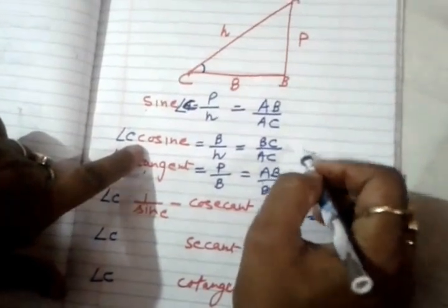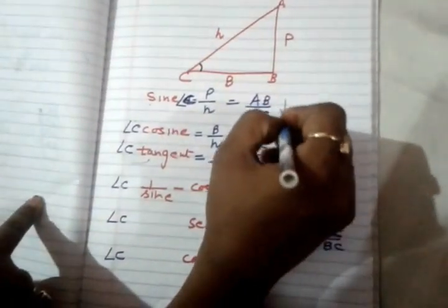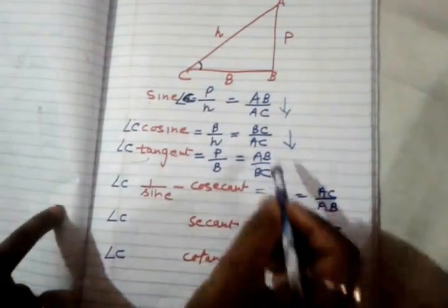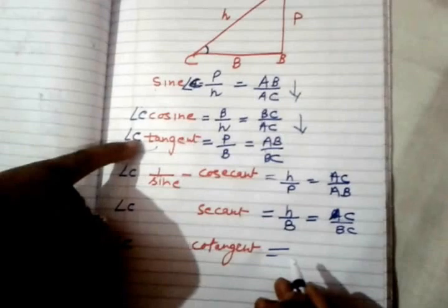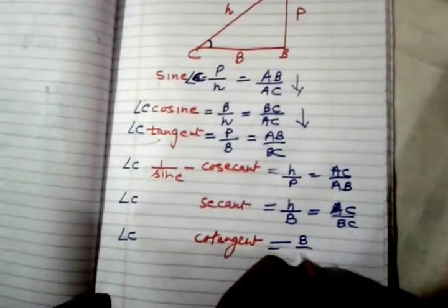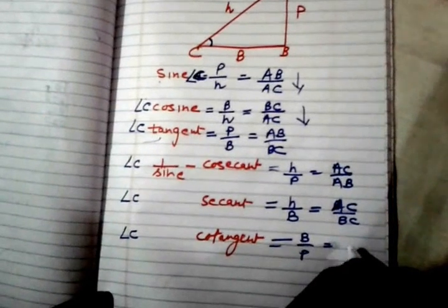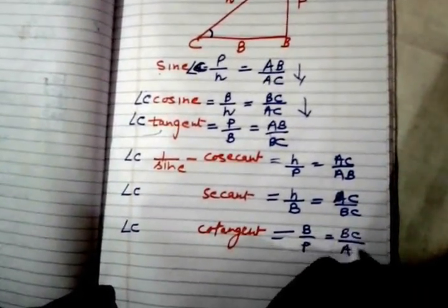Its reciprocal - we wrote for cosecant, its reciprocal we wrote for secant. Or cotangent is tangent's reciprocal, which is B upon P, or it is equal to BC upon AB.